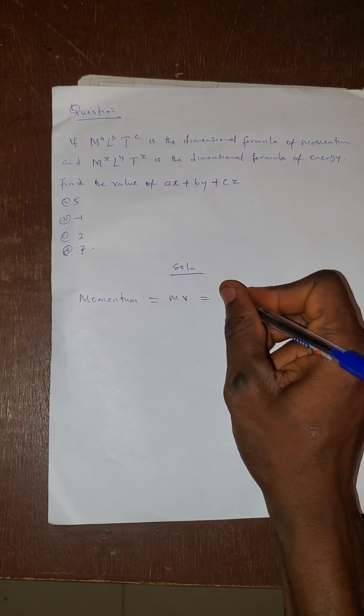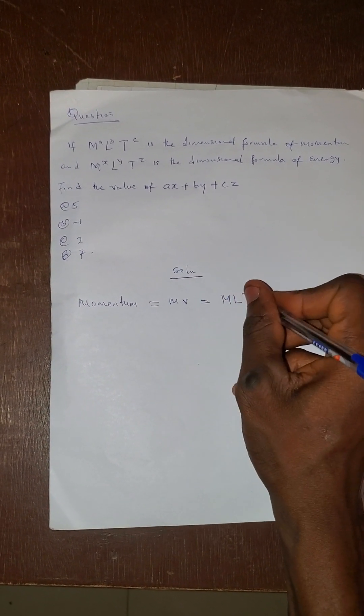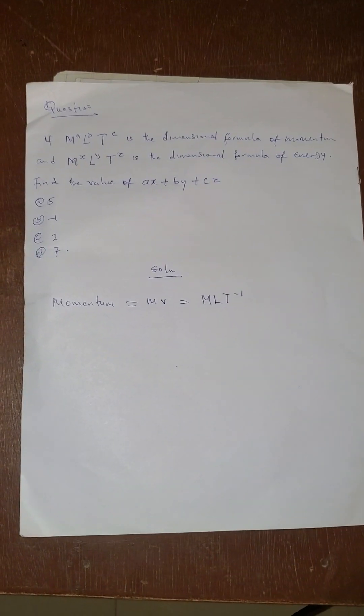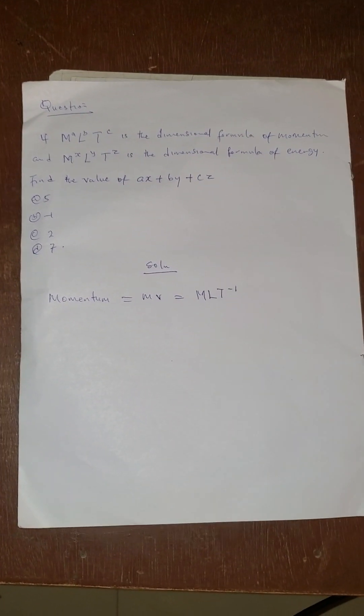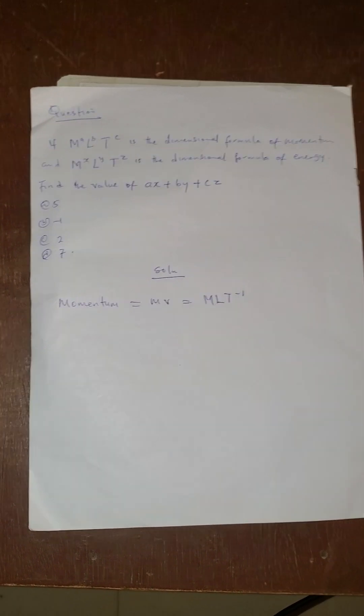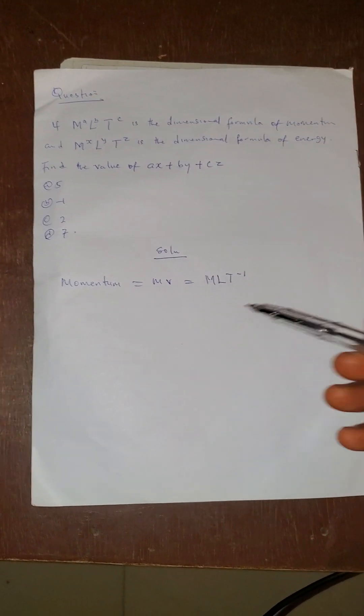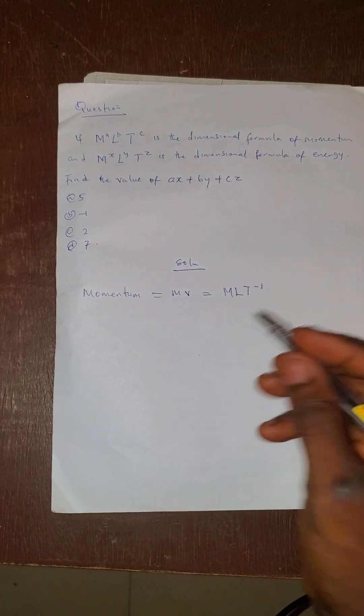Dimension for mass is M. Dimension for velocity is LT raised by minus 1. If you don't know about dimension very well, I released a video on dimensional analysis in which I explained how to deal with dimensional analysis. So this is just part of the question to back it up.